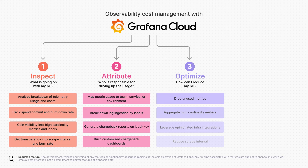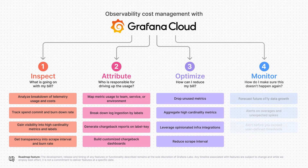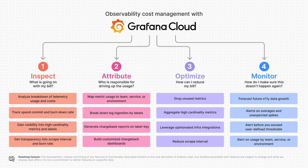If you have a mandate to reduce costs, the Optimize pillar is best suited to analyze usage patterns and suggest recommendations on how you can eliminate wastage to reduce your observability bill. And finally, monitoring your spend can prevent surprise overages or warn you when you've exceeded a certain usage threshold of your observability platform.